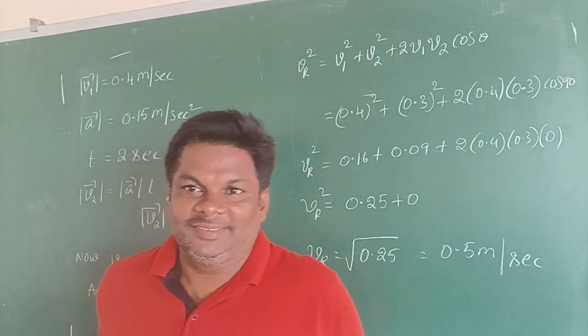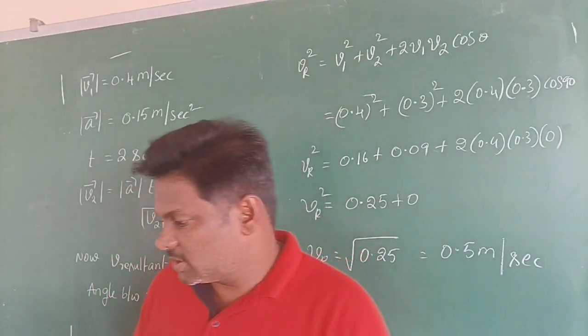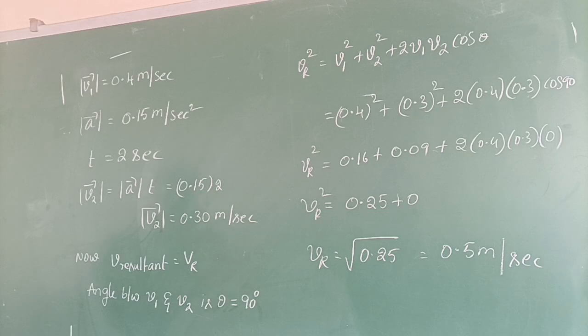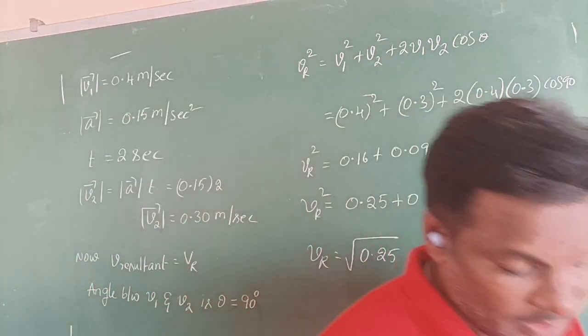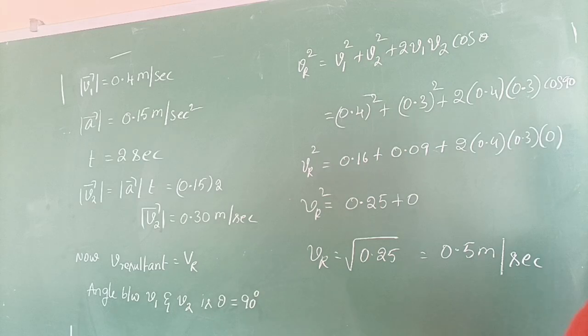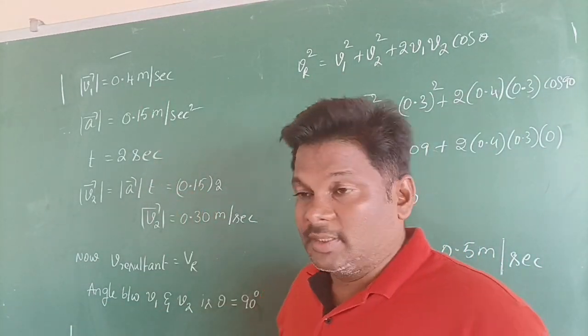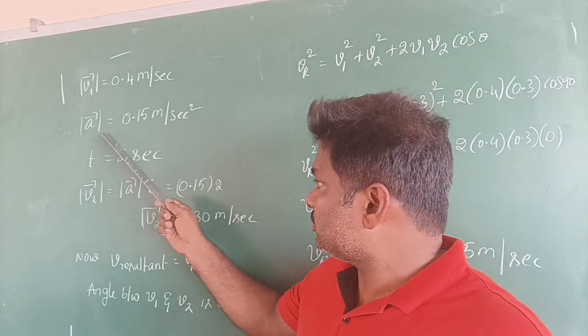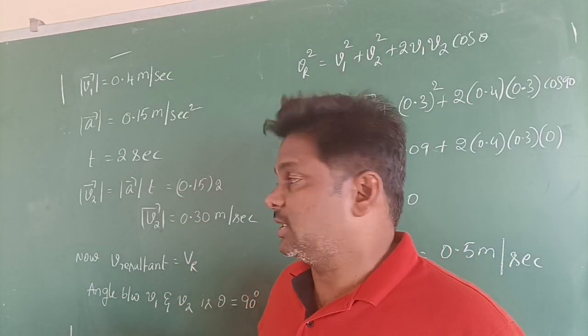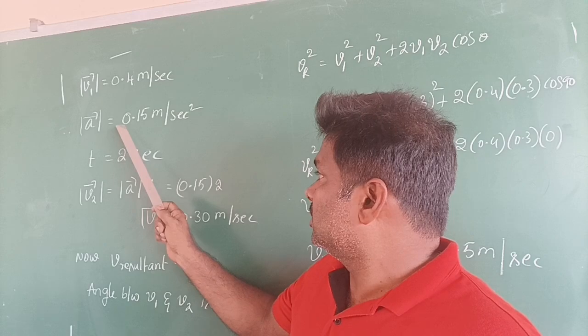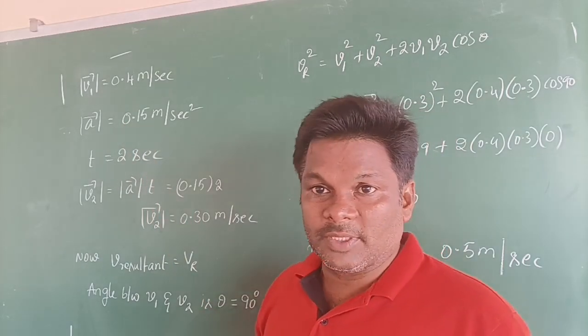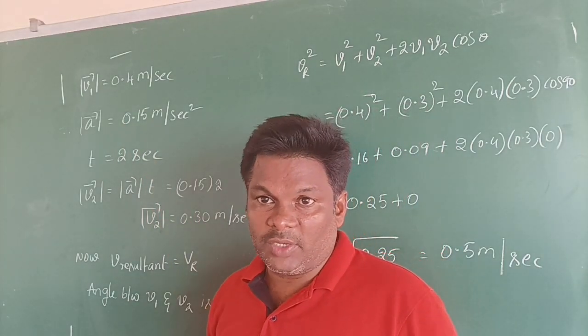Good afternoon. Today we are going to discuss your seventh problem. In this, a particle is moving with velocity equal to 0.4 meter per second, that is taken as V1. The magnitude of V1 is 0.4 meter per second, and the acceleration acquired by that object in 2 seconds is 0.15 meter per second square. Meter per second square is a unit of acceleration.